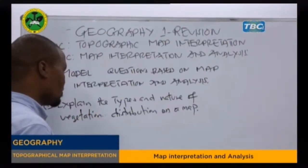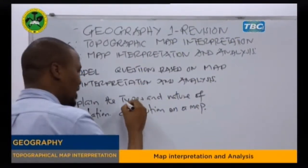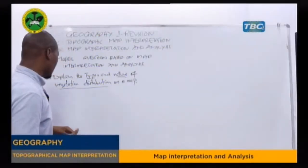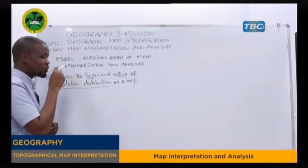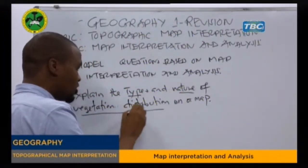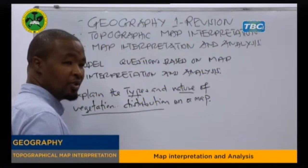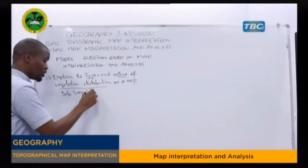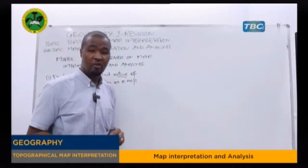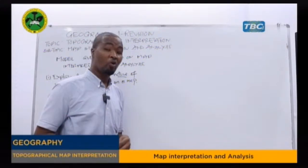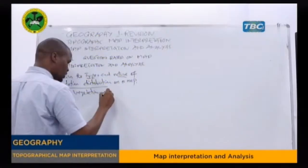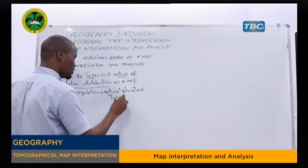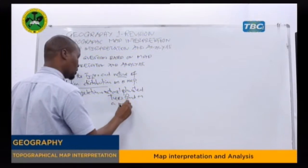Explain the type and nature of vegetation distribution on a map. The question needs us to explain the types and nature of vegetation distribution found on a map. So when identifying the key needs of this question, it means we first have to explain what vegetation is — we have to show the definition of vegetation. Vegetation refers to the natural planted trees found in a map area.